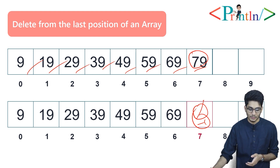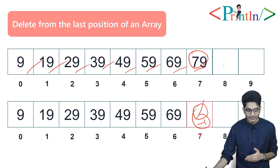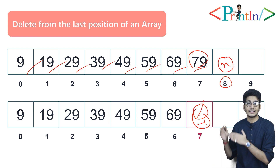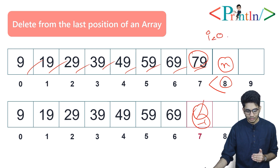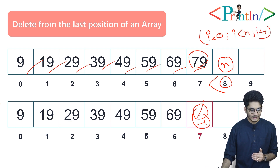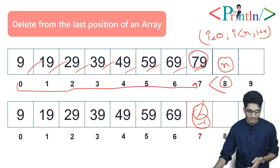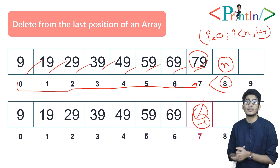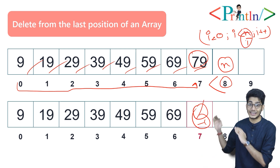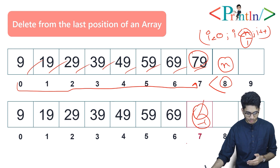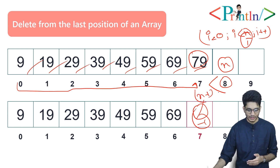After deleting any element from an array, let's consider the traversal. At first we are traversing up to n — so i equals zero, i less than n, i plus plus — we will traverse this array to seven. Now after deleting the element, up to which value will we traverse? We'll traverse up to n minus one.